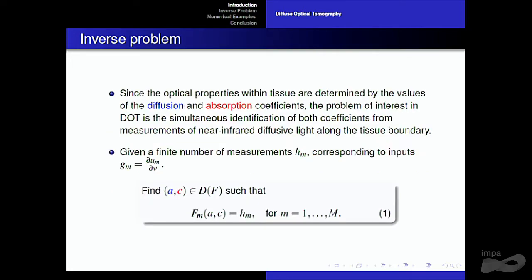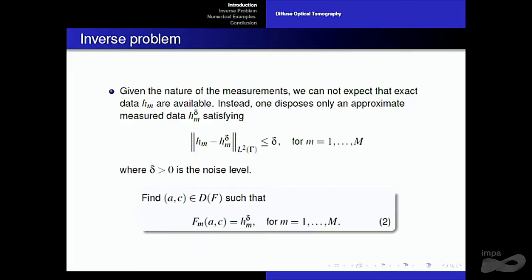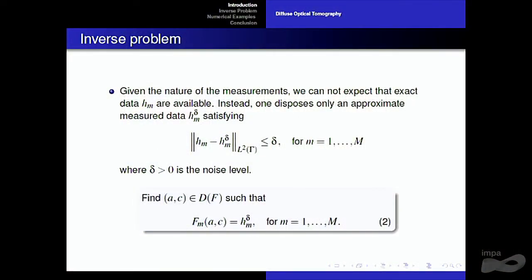Now we concentrate on the inverse problem. Since the optical properties within tissue are determined by the values of the diffusion and absorption coefficients, the problem of interest in DOT is the simultaneous identification of both coefficients from measurements taken along the boundary. From a mathematical point of view, we work with a finite number of measurements corresponding to inputs G1 through GM — boundary conditions — and we want to find a pair A, C such that this equation is valid for all measurements. Given the nature of the measurements, we cannot expect exact data, so we consider approximate measured data H_M^delta, where delta is the noise level.